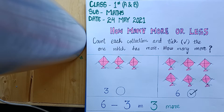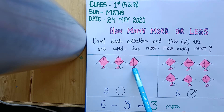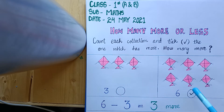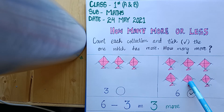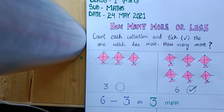So let's count. In the first collection, kites are given here. One, two, three — there are three kites. And here: one, two, three, four, five and six — here there are six kites. So clearly, this collection has more kites.